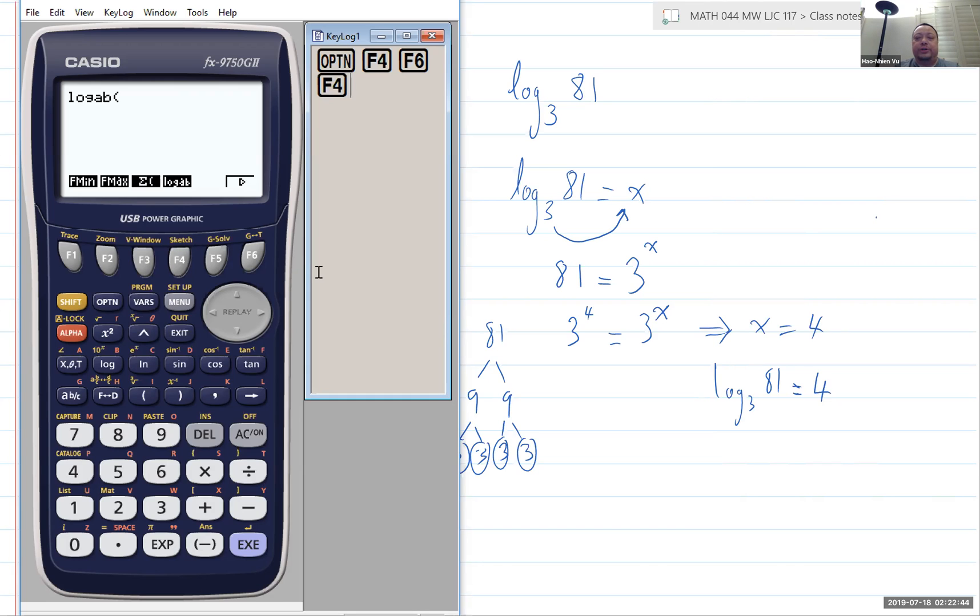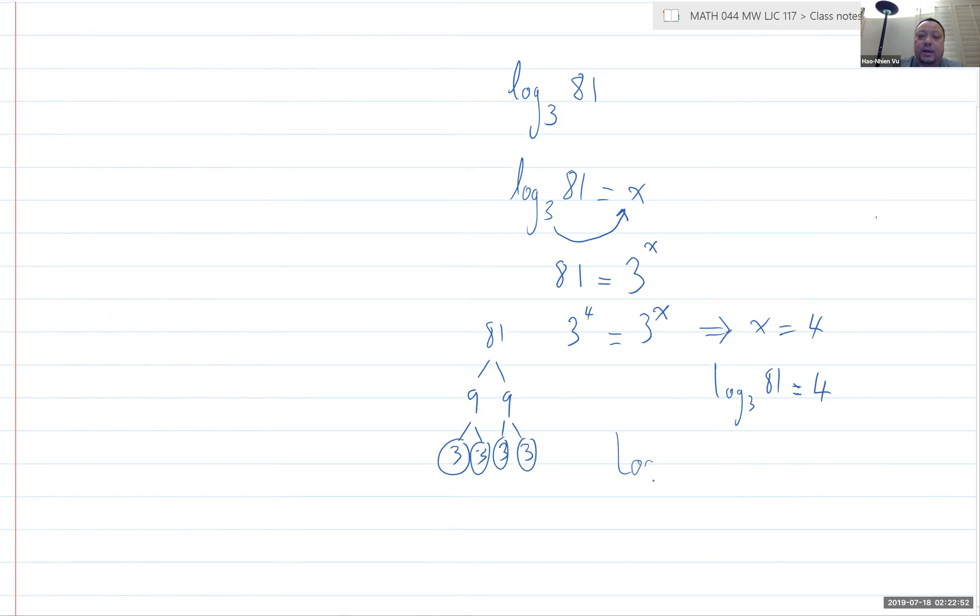Alright, so the order that I'm going to enter for the calculator is going to be this. It's going to be log AB. And then I'm going to enter the number A first. That's the base first, comma, and then the numerical. So the base. Then the number. The comma in between. Okay. So that's what I want to do on the Casio.